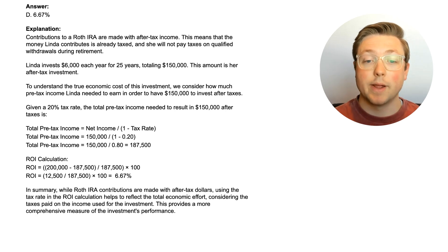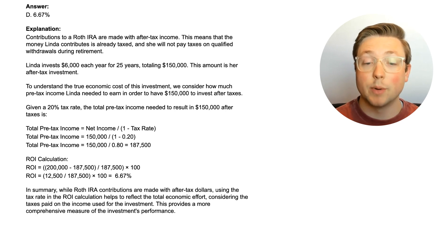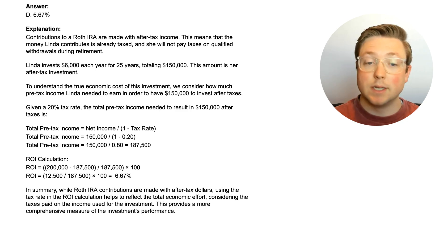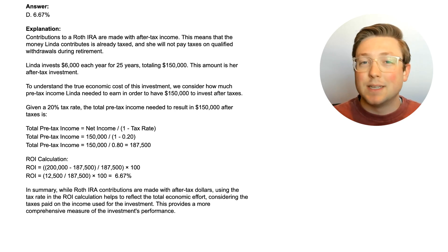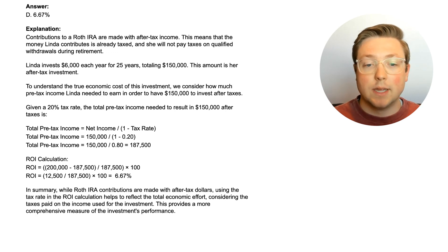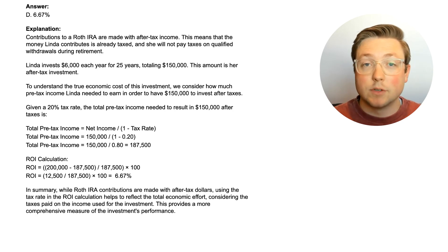Contributions to a Roth IRA are made with after-tax income. This means the money Linda contributes is already taxed, and she will not pay taxes on qualified withdrawals during retirement. Linda invests $6,000 each year for 25 years, totaling $150,000, and this amount is her after-tax investment. It might sound like that was the full investment and you didn't need to think about the tax because Roth IRAs are after-tax investments — but let's read a little bit more.